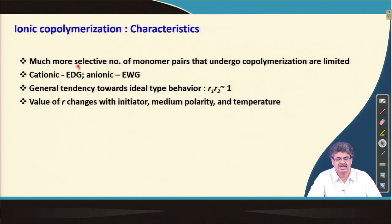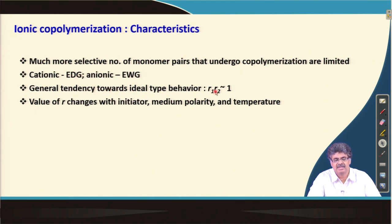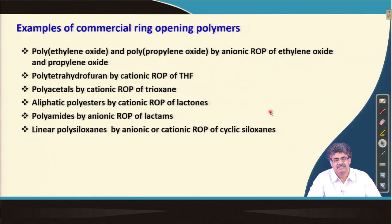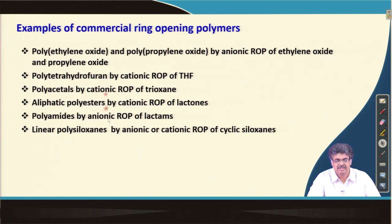For ionic copolymerization, the process is much more selective and fewer monomer pairs can be copolymerized. Cationic polymerization favors electron-donating groups and anionic polymerization favors electron-withdrawing groups. There is a general tendency toward ideal behavior where R1 × R2 ≈ 1, and R values change with initiator, medium polarity, and temperature. Commercial polymers prepared by ring-opening polymerization include copolymers of polyethylene oxide and polypropylene oxide, among other examples available in the literature.